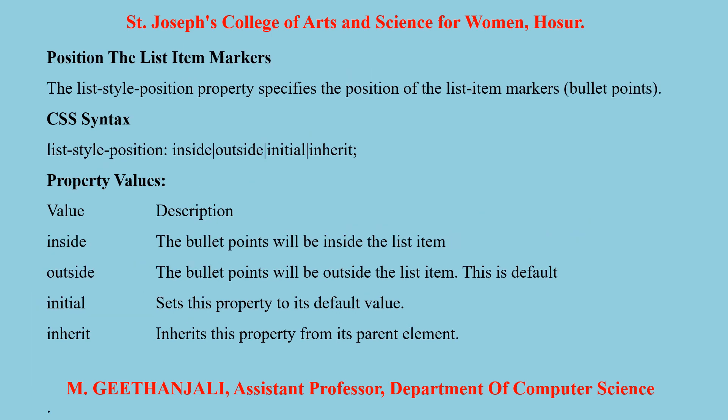The list-style-position property helps to specify the position of the list item marker in bullet points. The syntax is: list-style-position colon: inside | outside | initial | inherit. 'Inside' means the bullet points will be inside the list items. 'Outside' means the bullet points will be outside the list items — outside is the default declaration. 'Initial' sets the property value to its default value. 'Inherit' gets the property from its parent.